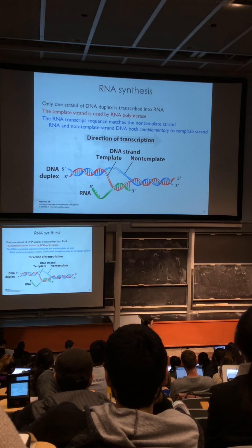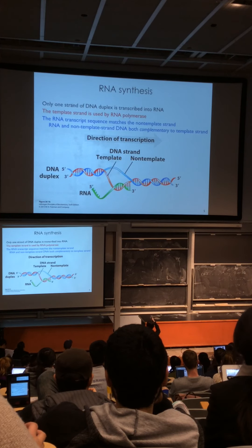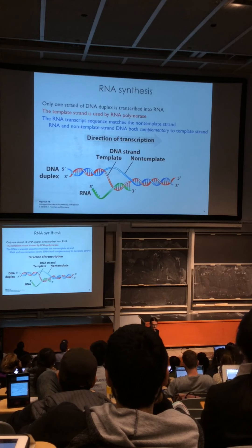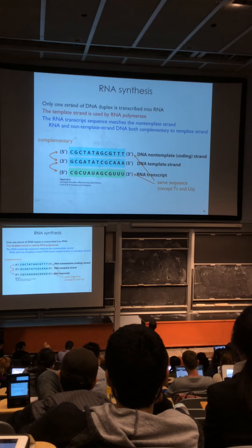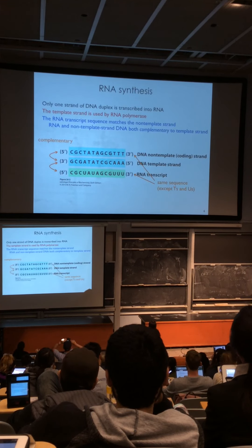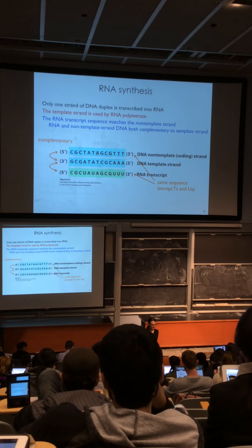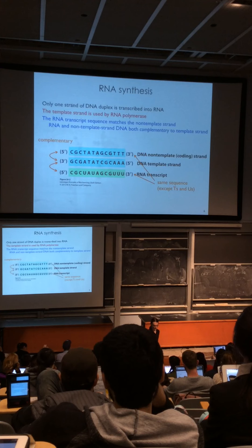The RNA-DNA double helix is antiparallel: the synthesized RNA strand runs 5' to 3' along a template strand running 3' to 5'. Looking at actual sequences, the template strand sequence running 3' to 5' corresponds to the RNA transcript synthesized left to right, and this exactly matches the sequence of the non-template DNA strand—except that thymines in the DNA are replaced with uracils in the RNA.